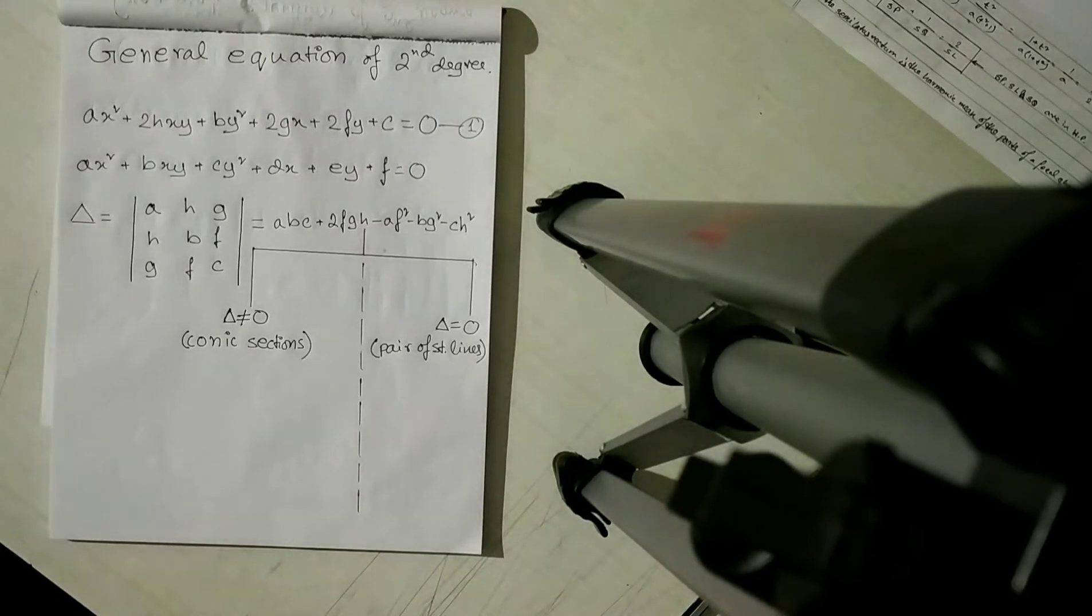So we see that if Delta is not equal to 0, the equation of the curve symbolizes conic sections. And if Delta is equal to 0, the equation of the curve is the equation of a pair of straight lines. Now, even these have cases. Let's start with conic sections.